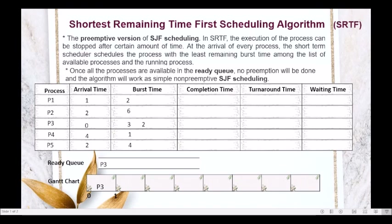At time 1, we check which process arrived in the ready queue. P1 arrived at time 1. So the ready queue now has P3 and P1 at time 1.